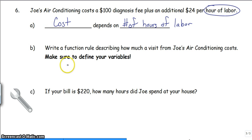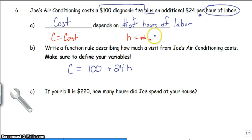I go ahead and I write my function rule. The cost is going to be equal to, I have a diagnosis fee, that's not going to change. That's just basically if Joe shows up, he charges me $100, whether he works at all or not. So $100 plus an additional $24 per, there's my multiplication again. So 24 times the number of hours, H. Oh no, I didn't define my variables. Make sure you do. If you don't, you will get points taken off. Cost, I will define as C. H will be the number of hours of labor. Now I can use C and H in my function rule, because I've defined them. I know what they are.